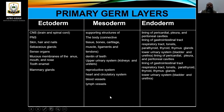From the mesoderm, the structural framework of the body is formed — connective tissues like bones, cartilages, muscles, ligaments, and tendons, the dentin of teeth, the upper urinary system such as kidneys and ureters, the reproductive system, heart and circulatory system, blood vessels, and lymph nodes all originate from mesoderm.